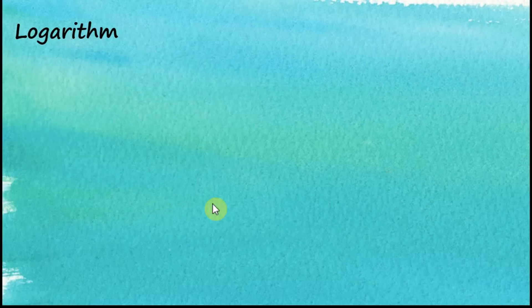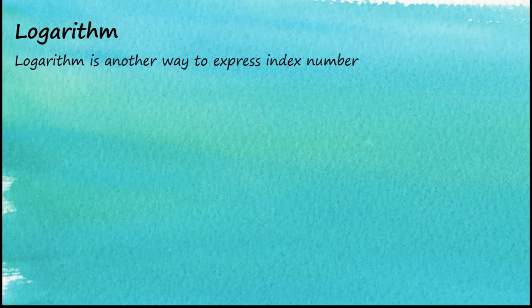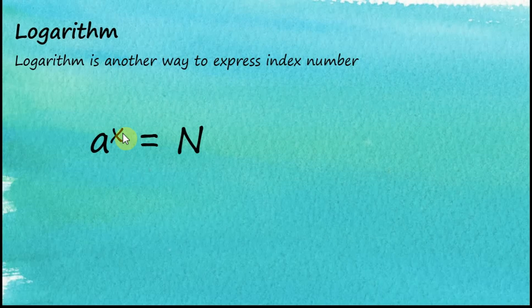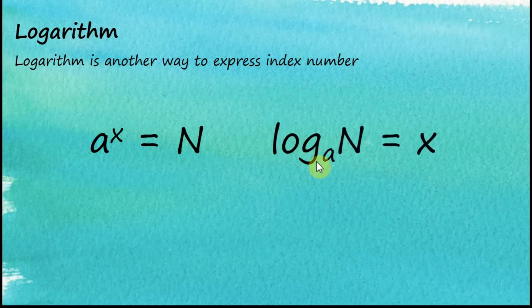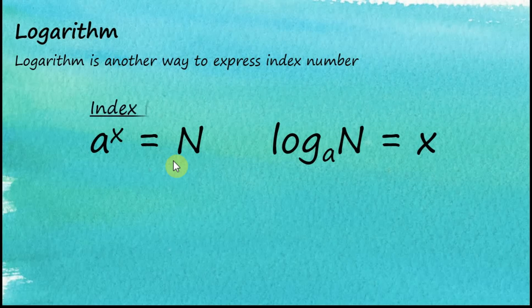So what is a logarithm? Logarithm is another way to express an index number. If we have an index number a to the power of x, where a is the base and x is the index, and a to the power of x equals n, we can write this in another mathematical symbol as log base a of n equals x. This is called the index form, and this is called the logarithmic form.